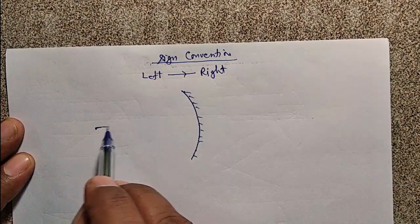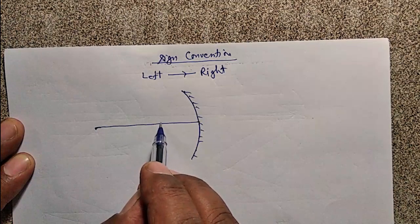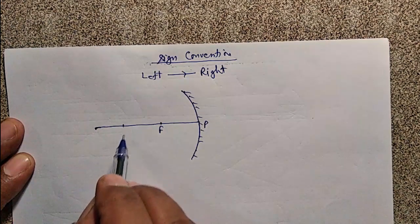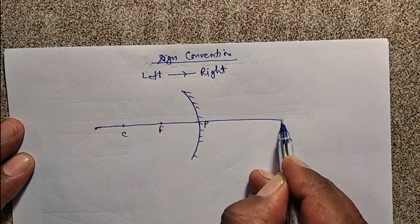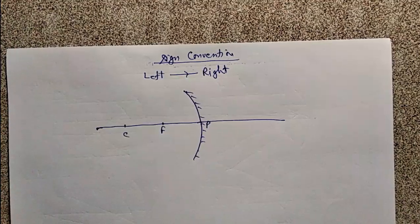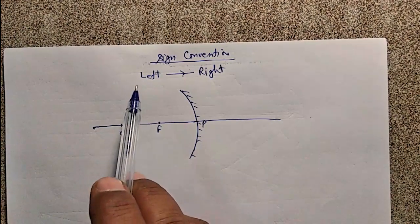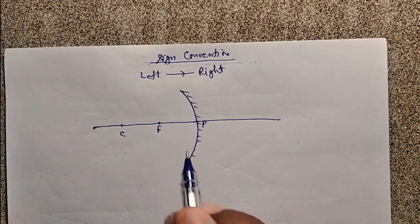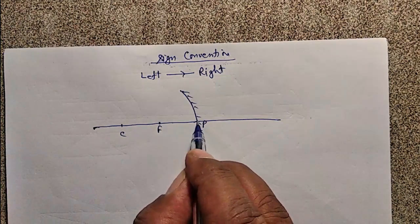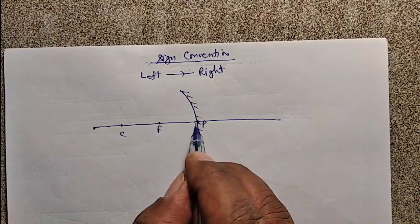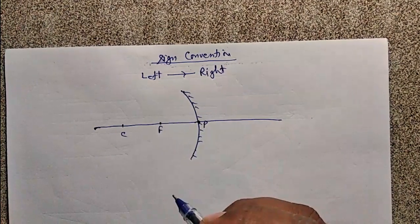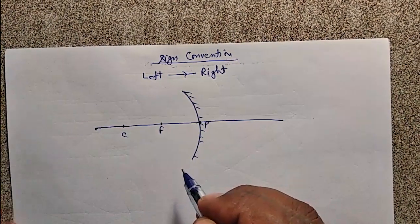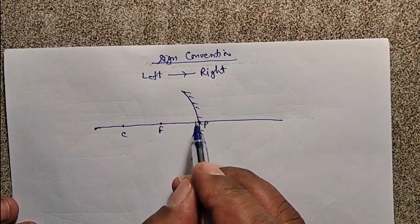This is the principal axis, pole, focus, and center of curvature. Second rule: all the distances are measured from the pole.